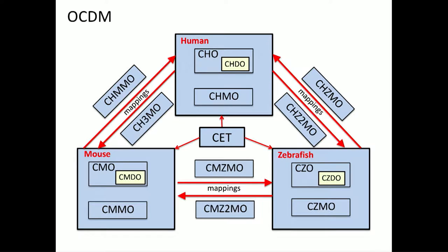The OCDM consists of a series of sub-ontologies, one for each of three species: human, mouse, and zebrafish. Within each one we have an adult normal ontology, a developmental ontology, and malformations. That structure is replicated across all three species, and then we have mappings between the terms in these ontologies.